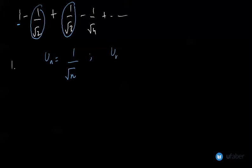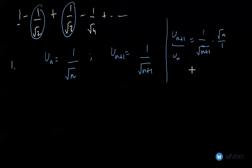So what would be U_{n+1}? It would be 1/√(n+1). Let me find out the value for this ratio. This would be √n/√(n+1), which is √n/(n+1), which is clearly less than 1. So the first condition is satisfied.